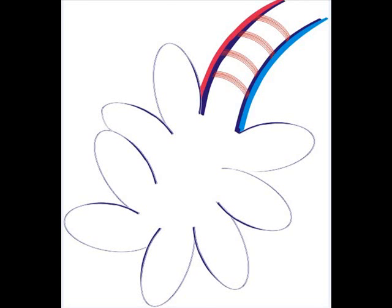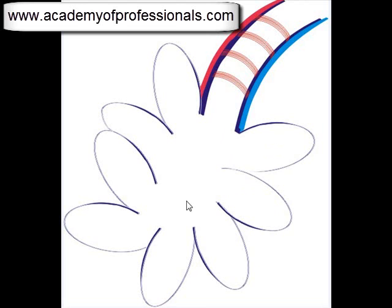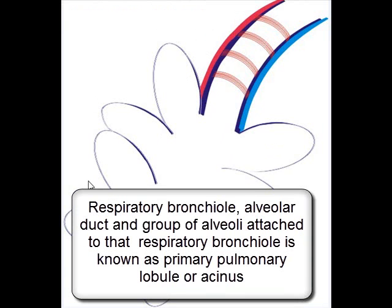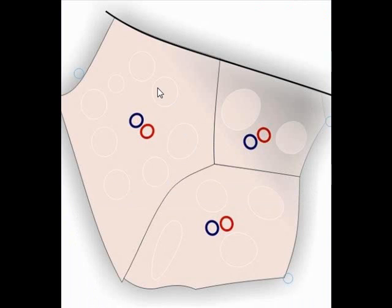A group of alveoli together with the alveolar duct and respiratory bronchiole is known as a primary pulmonary lobule, or acinus. Several primary pulmonary lobules are grouped together by thin layers of connective tissue to form secondary pulmonary lobules.